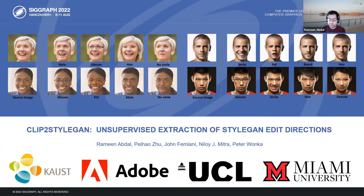Hello everyone, my name is Rameen Aptal. I'm a PhD student in the Visual Computing Center at Kaust. I will present our paper, Clip to StyleGAN, Unsupervised Extraction of StyleGAN Edit Directions. It is a joint project with Kaust, Adobe Research, UCL, and Miami University.